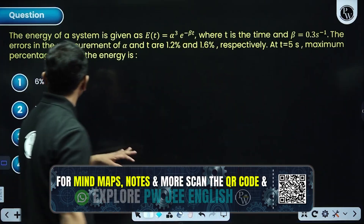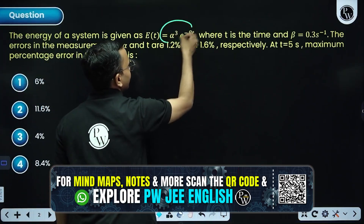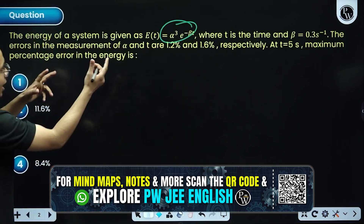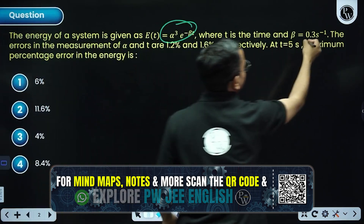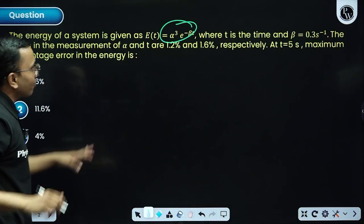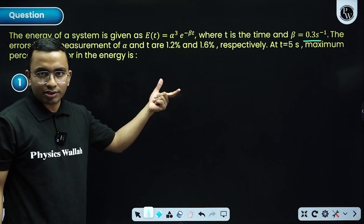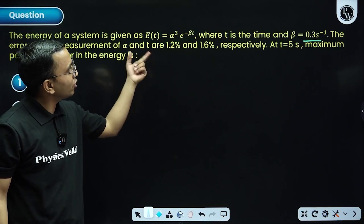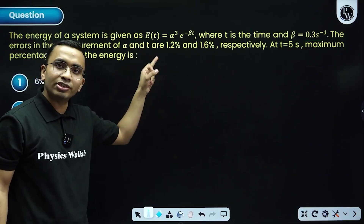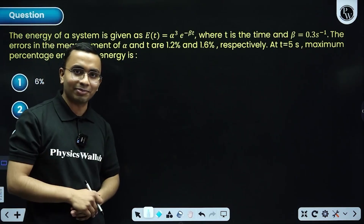First question: the expression for energy is given. Here alpha is there, time is there, and beta is a constant equal to 0.3. We need to find the error in energy. Now this is not a standard expression, so you cannot write delta E by E directly. You need to differentiate, write the relation, put the values. Pause, do it, then come back.